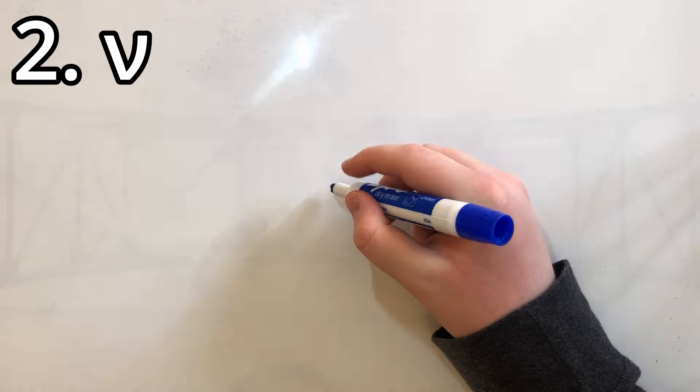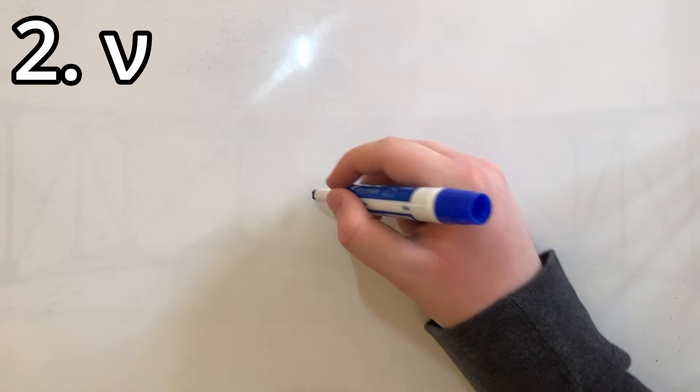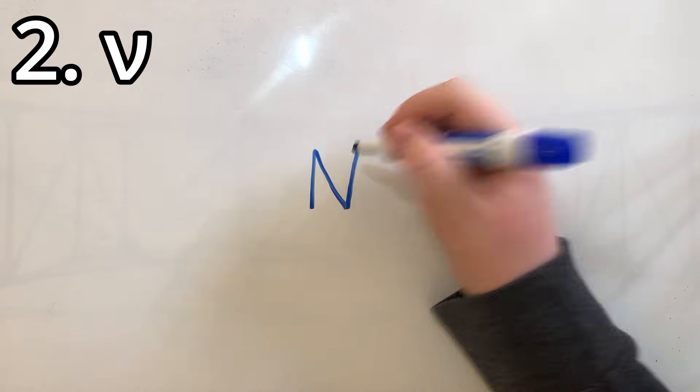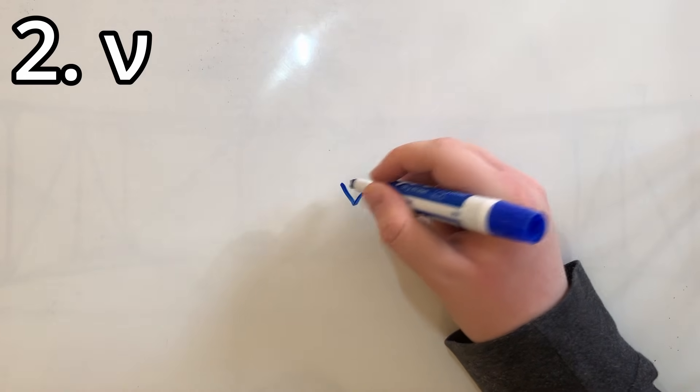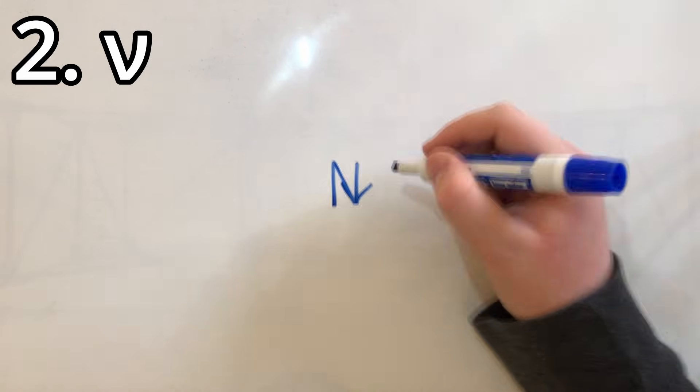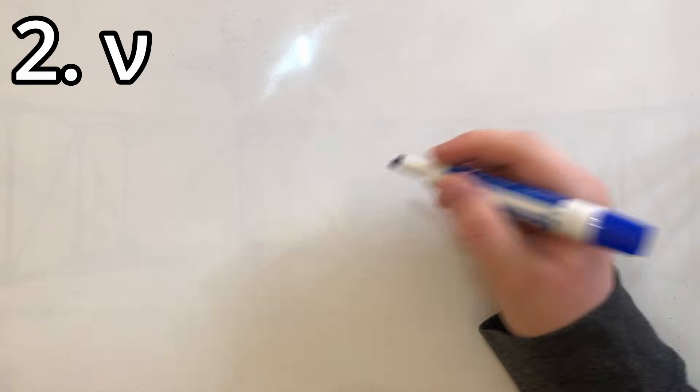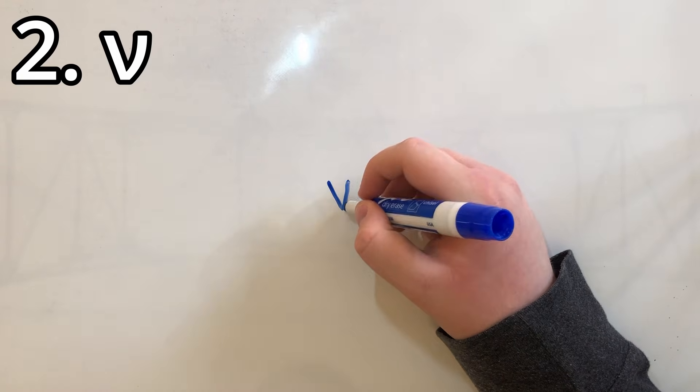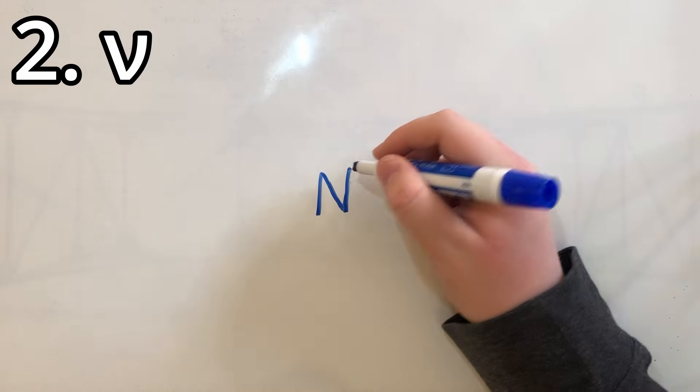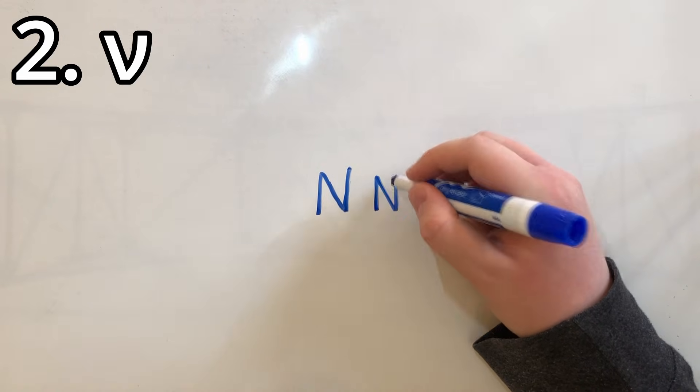Spot number two goes to nu because also pretty easy to cover up. It can get a little hard if you write your lowercase more like that, like a lowercase v from English. But technically, this side is supposed to be more vertical. So it still works out pretty well.